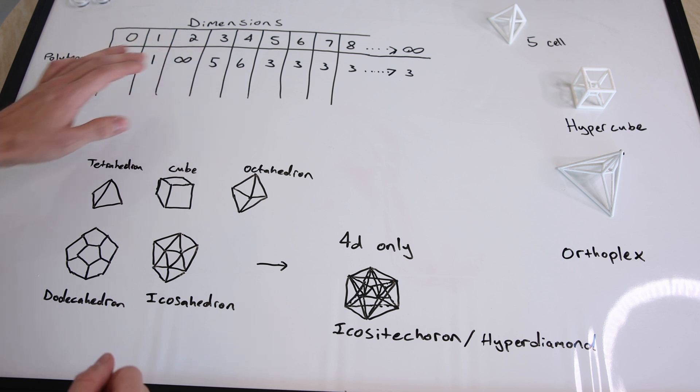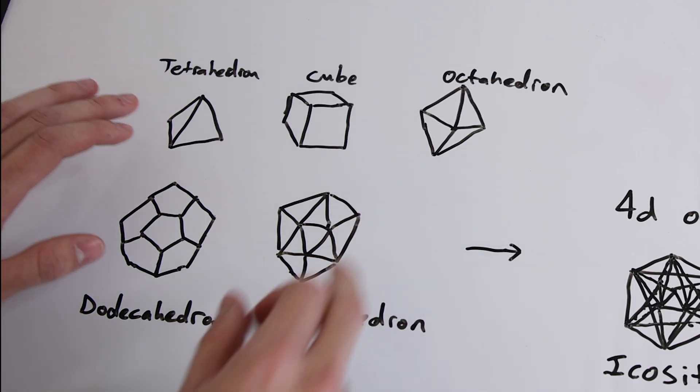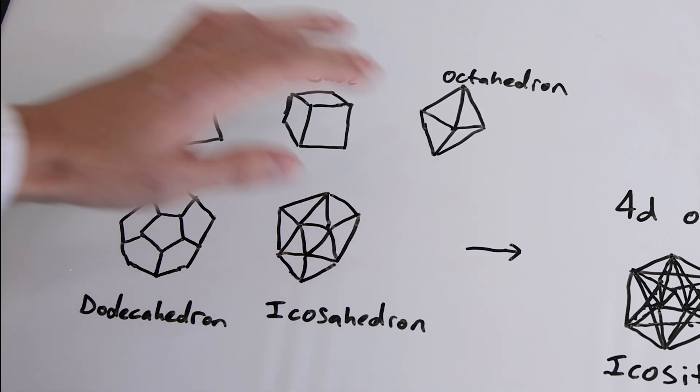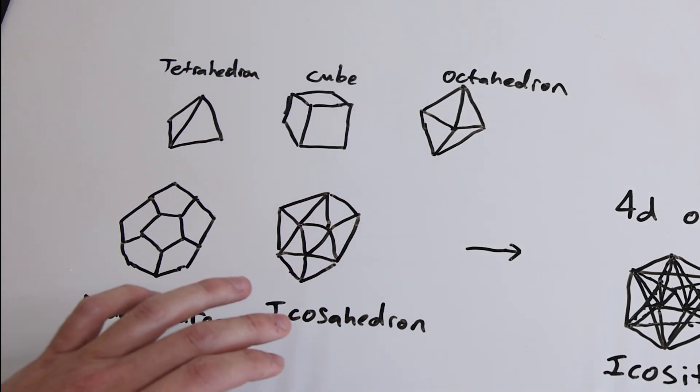In three dimensions we have the five platonic solids which are the tetrahedron, the cube, the octahedron, the dodecahedron, and the icosahedron.